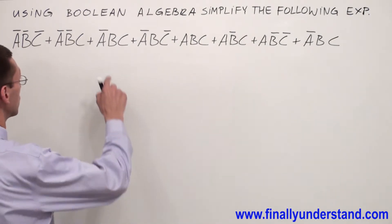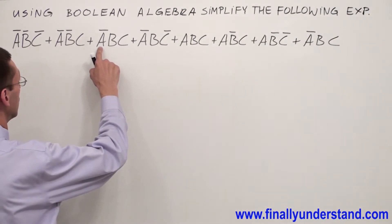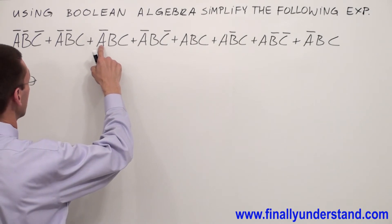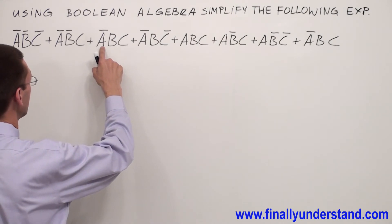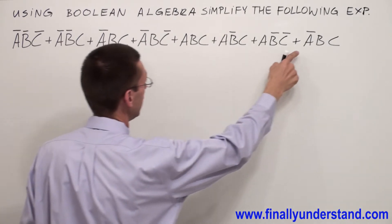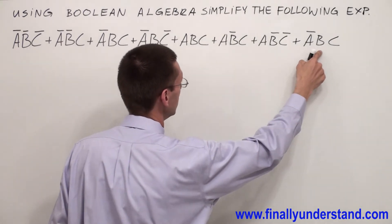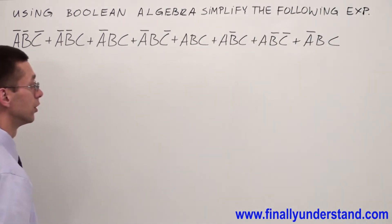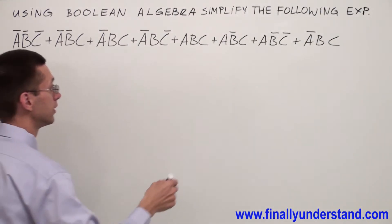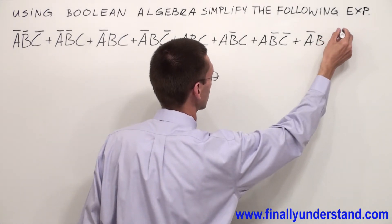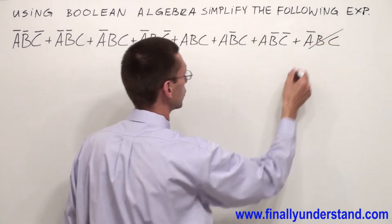Right? And if you are going to see, you will notice that A'BC and A'BC, they repeat. So anytime they repeat, one of them you can cross out — just one of them.